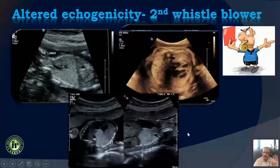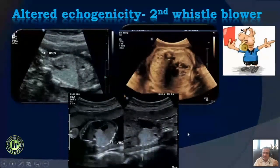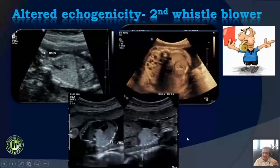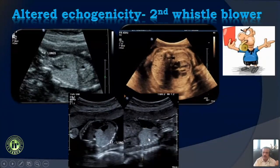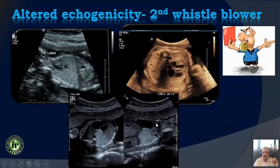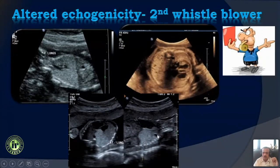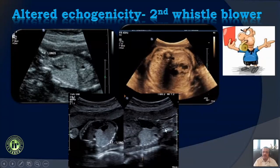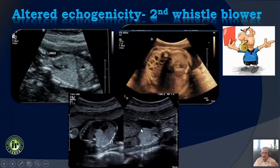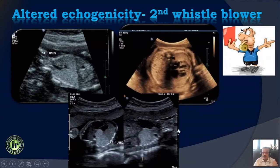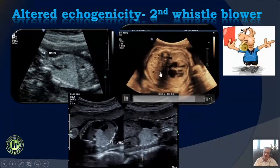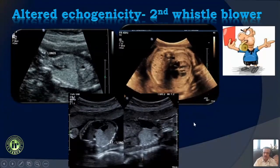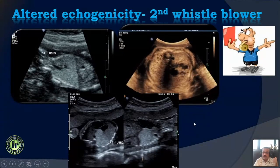The second whistleblower is the appearance of the lung. Typically, lungs are slightly more hyperreflective compared to the liver. But if the echogenicity is significantly different compared to the liver, that is another clue that something is going wrong in the lungs or thorax. This can include a large hyperreflective mass, as we will see later on.